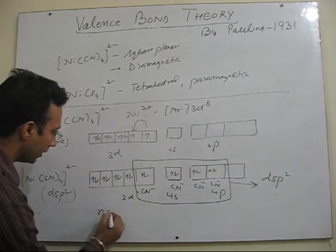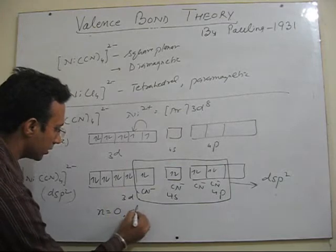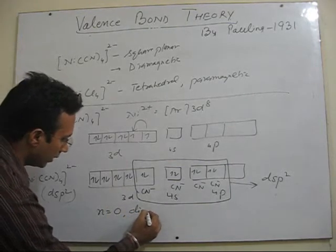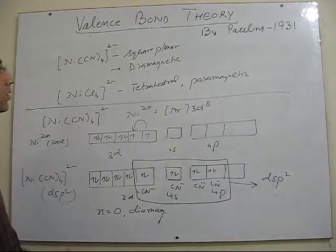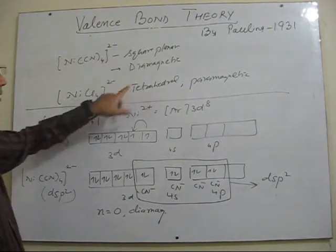And lastly we will see the number of unpaired electrons in this case will be 0. So this explains your question that the complex is diamagnetic in nature as well as it is square planar. So let's explain.